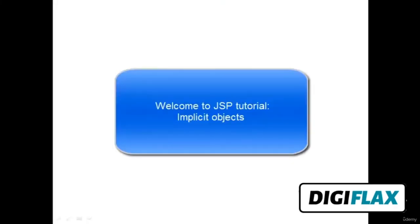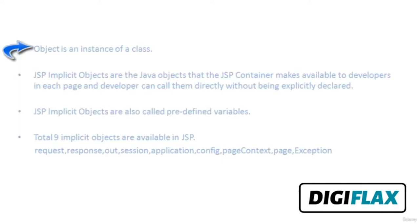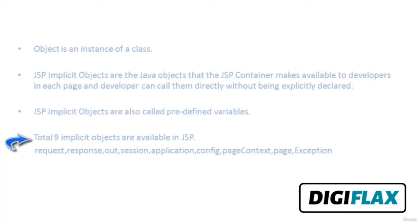In this tutorial, we are going to learn about implicit objects. An object is an instance of a class. JSP implicit objects are the Java objects that the JSP container makes available to developers in each page. Developers can call them directly without explicitly declaring them. JSP implicit objects are also called predefined variables. There are a total of 9 implicit objects available in JSP: request, response, out, session, application, config, pageContext, page, and exception.